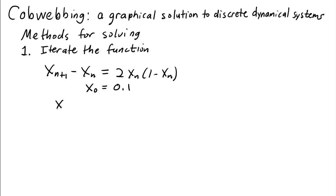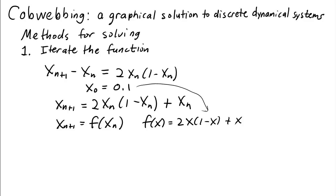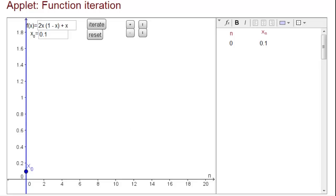we could solve for x_{n+1} in terms of x_n. Adding x_n to both sides we obtain x_{n+1} = 2·x_n·(1 - x_n) + x_n, in other words x_{n+1} is some function f(x_n) where f(x) = 2x(1-x) + x. To determine future values we take the initial condition and plug it into f, then take the result and plug it into f again, iterating. A function iteration applet is a quick way to calculate these iterates once you've entered the function and initial conditions.